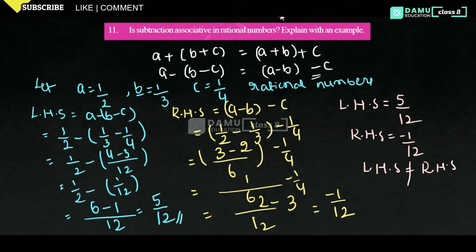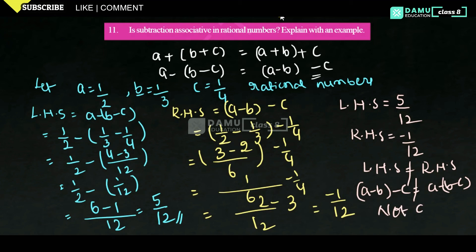That means the associative property A minus (B minus C) equals (A minus B) minus C is not applicable here. Subtraction is not associative in rational numbers. Thanks for watching, please subscribe.